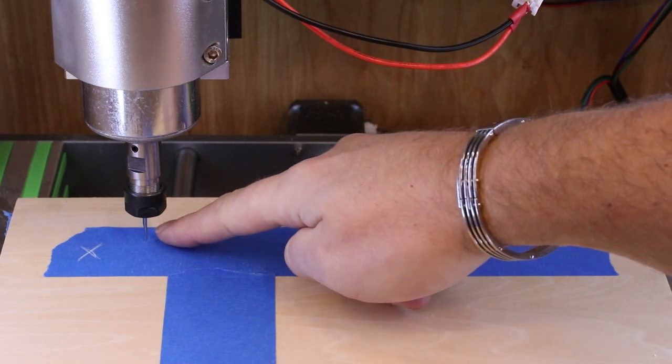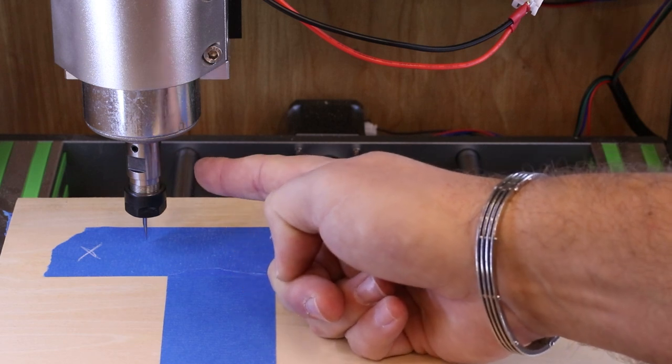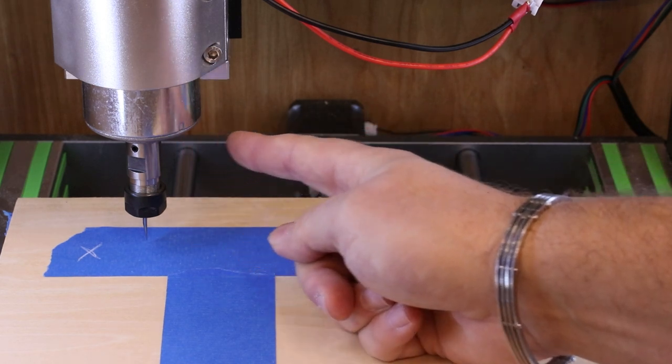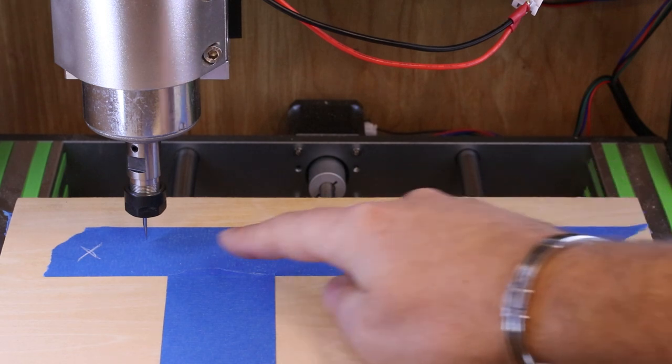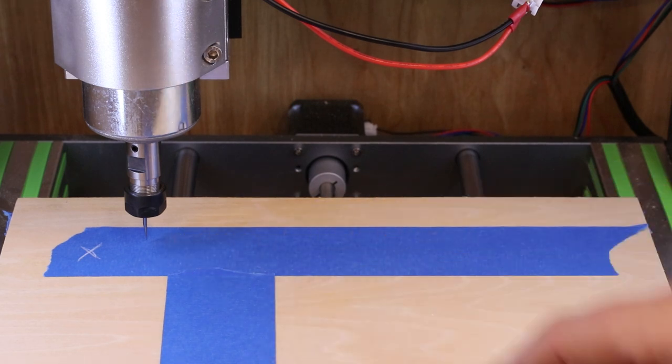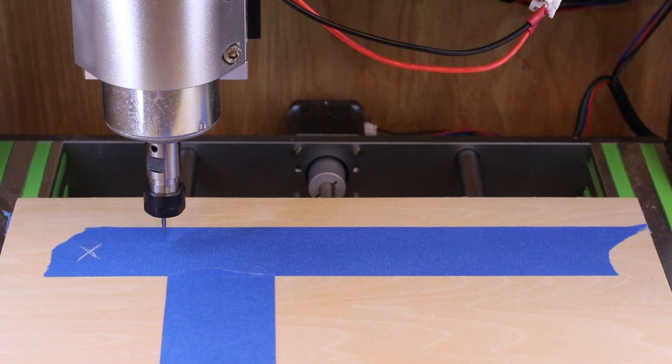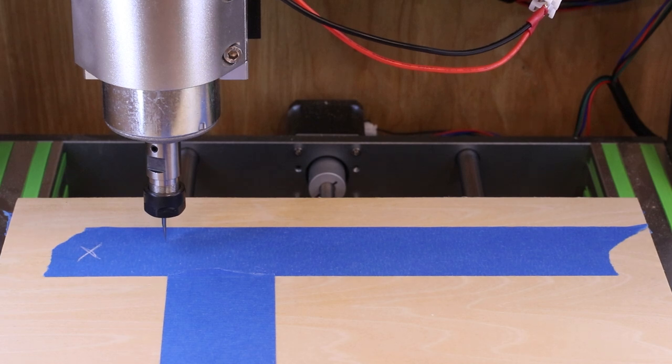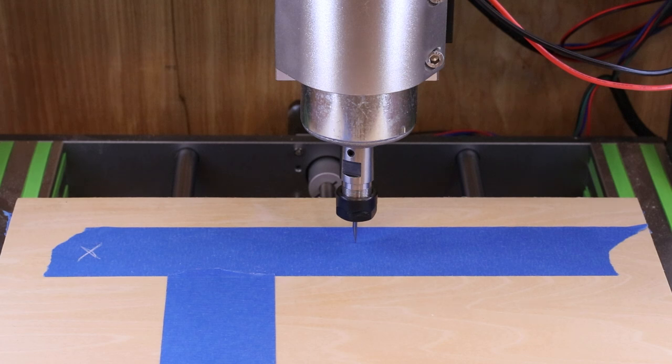I'm now ready to do my first test on the X axis. I've installed the V bit and lowered the Z down to just above the material. We're going to move it across 10 millimeters to take out the backlash, lower it down 2 millimeters and back up. This will put an indentation in the painters tape. We're then going to jog this across 100 millimeters within UGS, lower it down again 2 millimeters and back up to make another indentation.